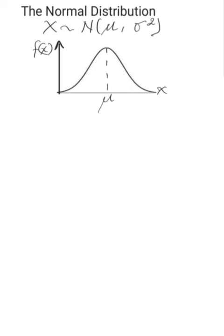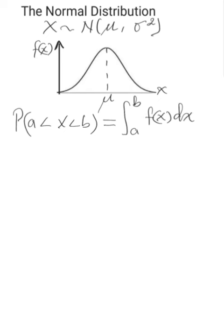Since the normal distribution is a continuous random variable, it can only measure values in ranges. The probability that the random variable takes a value within a given range, say a to b, is simply given by the area enclosed by the curve in that interval — just like for any other continuous random variable. This area is calculated by integration, integrating from the lower limit to the upper limit of the probability density function with respect to x. Since we calculate probability values by integration, the boundaries of the interval are not important, and that is why P(a ≤ X ≤ b) equals the integral from a to b of f(x) dx.